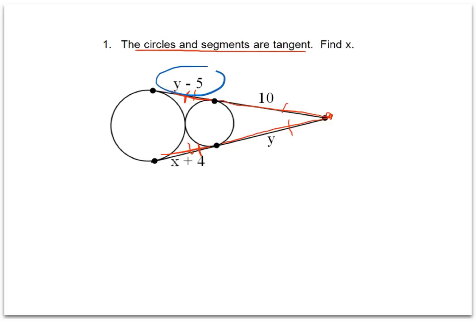If we were to start by setting up the equation that y minus 5 equals x plus 4, that's not going to work for us because we have two variables, an x and a y, and we wouldn't be able to solve for that.